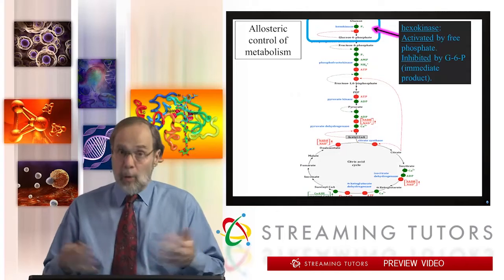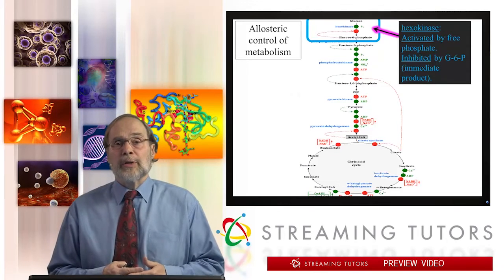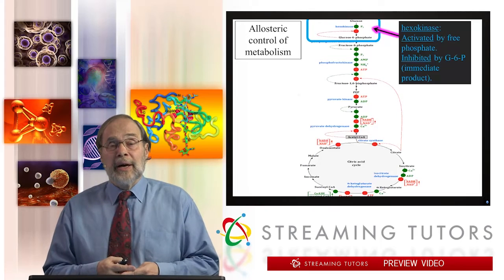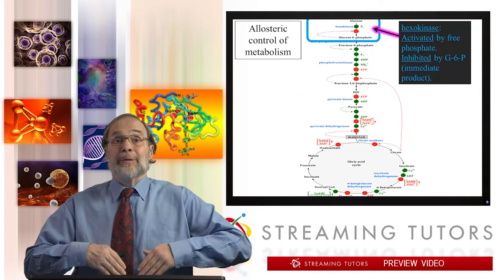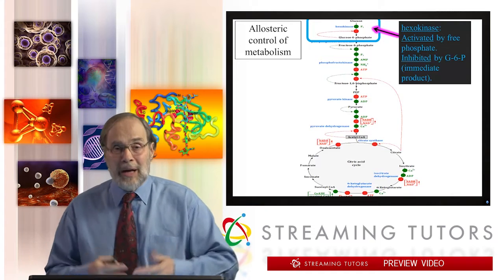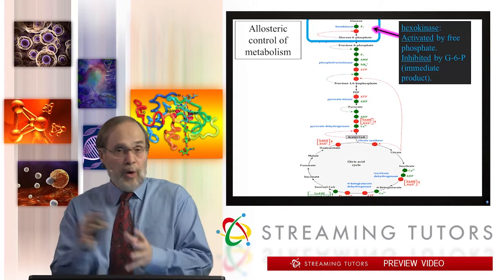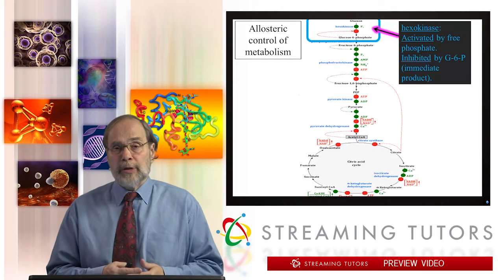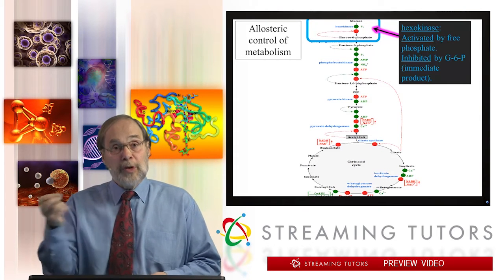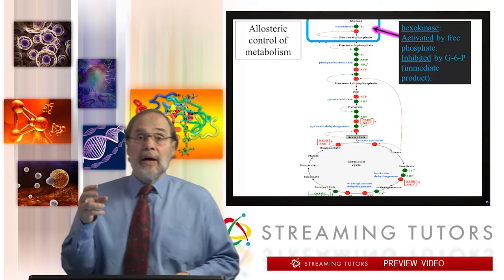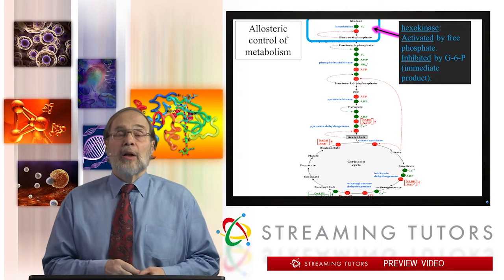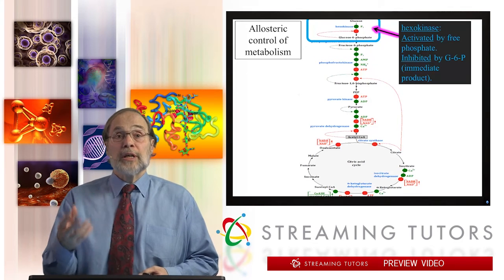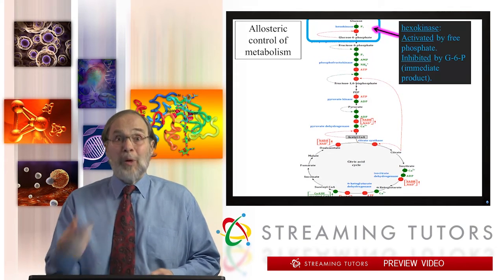ATP is very often — not always, but very often — the currency that's used to couple an exergonic reaction like ATP hydrolysis with a desirable but endergonic biochemical reaction like muscle contraction or biosynthesis. So in general, free phosphate — particularly in the context of the cytosol where glycolysis is occurring, or in the mitochondrion where the TCA cycle is going on — is usually a signal that it's time to make more ATP.